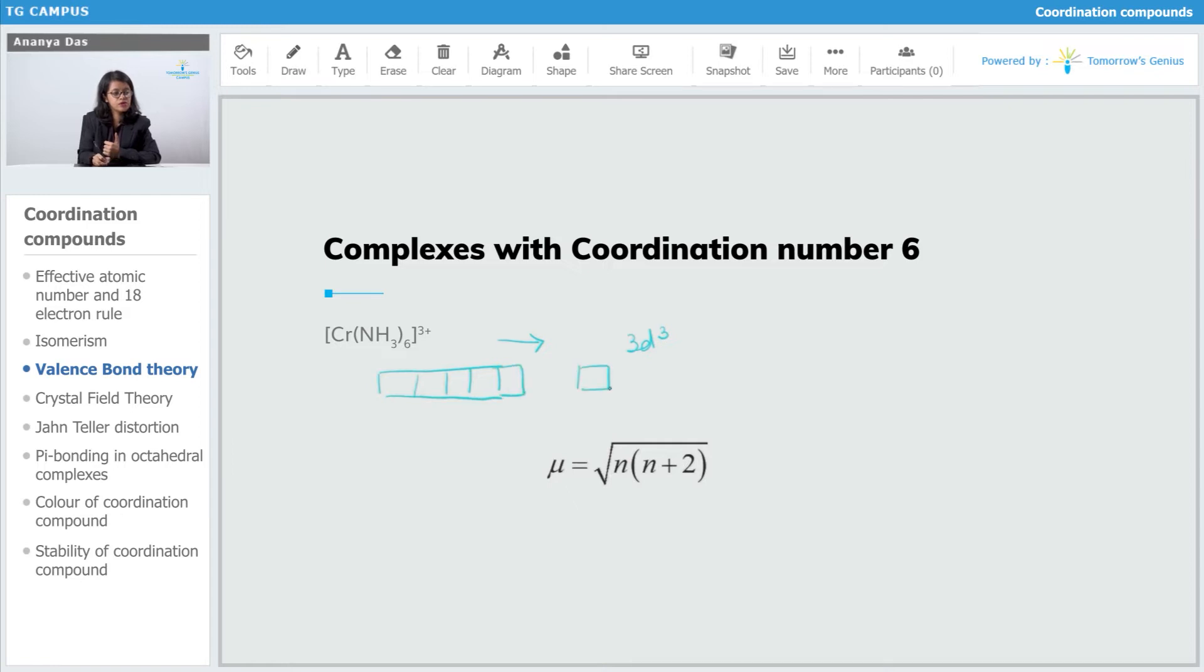This is a 3d orbital, 4s, 4p. I am not drawing the 4d orbital because we know that this was an inner orbital complex. These are the electrons of chromium and these are the electrons of NH3.